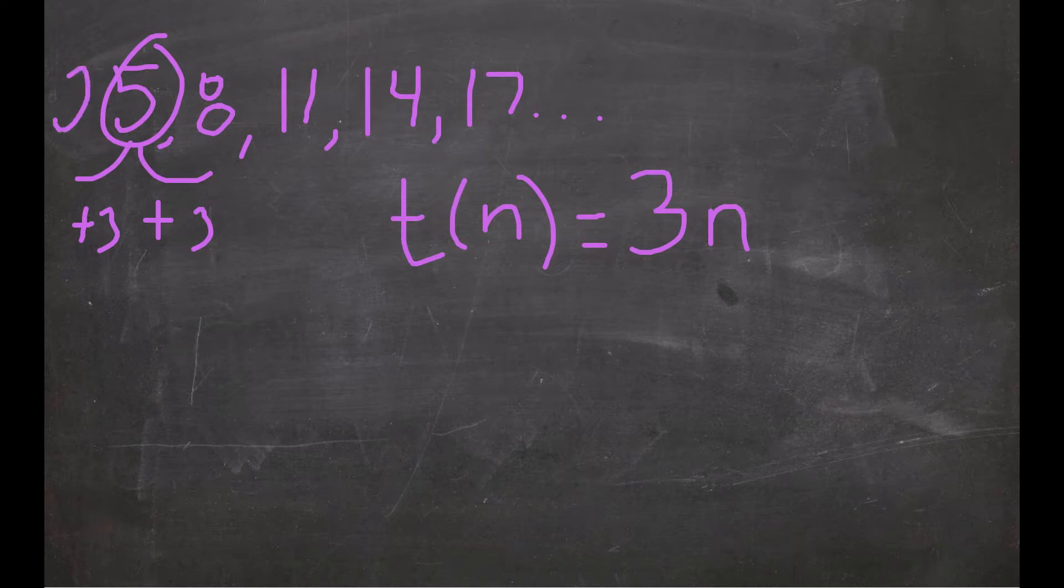what number could we add 3 to to get 5? Right, working backwards, our zeroth term would have been 2. So that means that we're going to start our rule at 2.